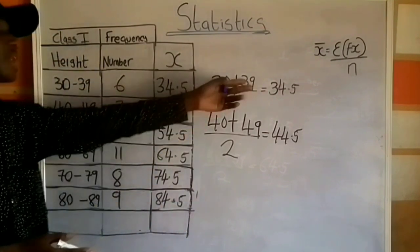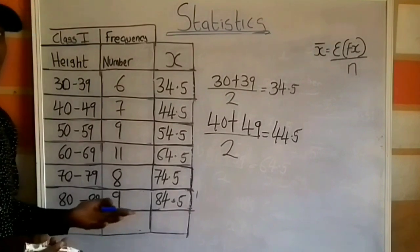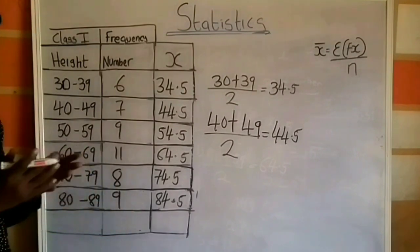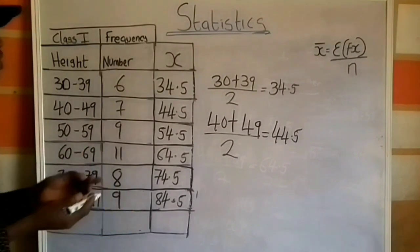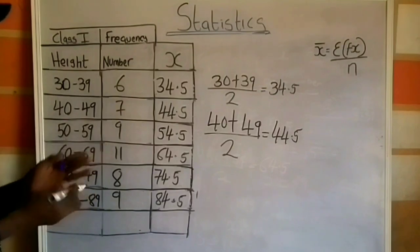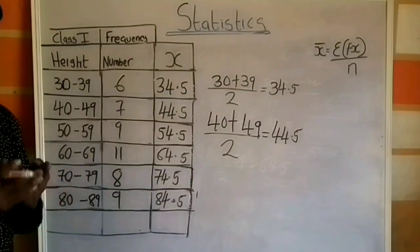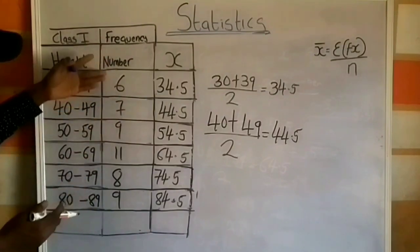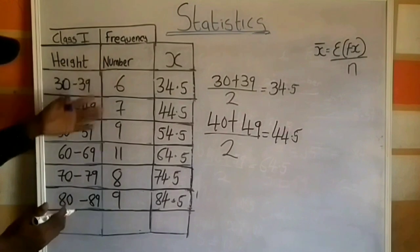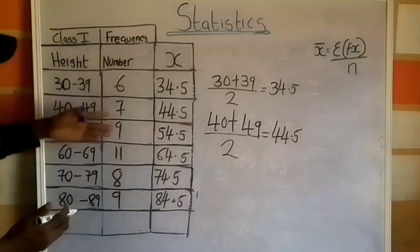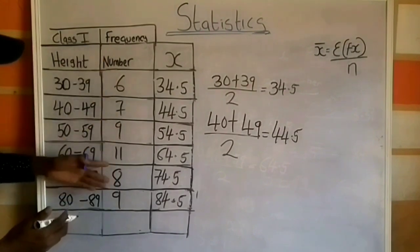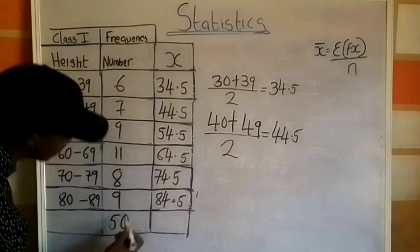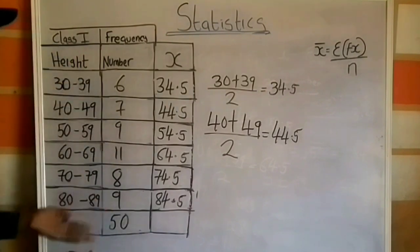From the formula I still need the value of n. The value of n is the total number of plants, which is also the total frequency. The total is the summation of 6, 7, 9, 11, 8, and 9, which gives 50. So the total number of plants is 50.